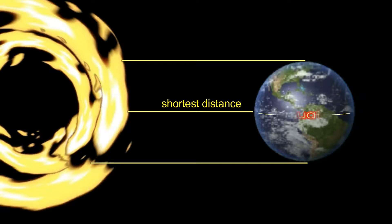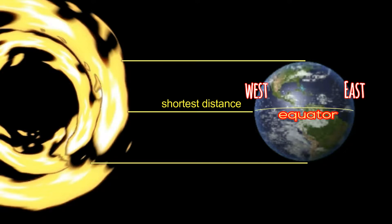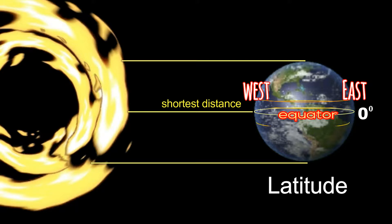This imaginary line that goes through the center of the Earth is called the Equator. Actually, it doesn't go through the center of the Earth — it forms an imaginary band that goes from east to west. The equator forms a band of latitude at zero degrees.